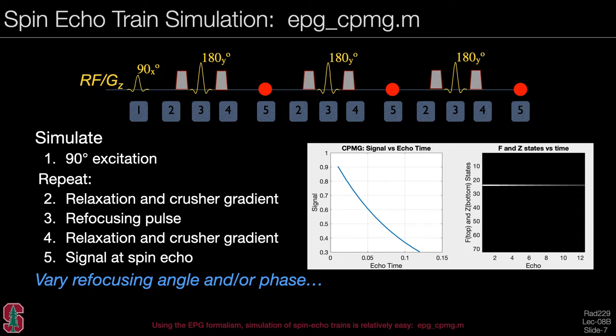The function also returns an image of the coherence pathway diagram, where the grayscale indicates how strong each state is. For perfect 180-degree pulses, the signal decays and there is no spreading into the transverse F states.